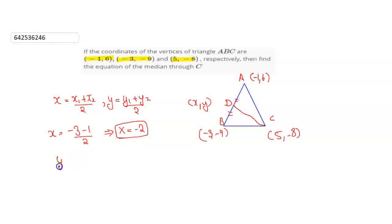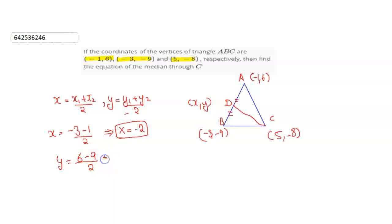And putting the y1 and y2 values, we will get y = (6 + (-9)) / 2, which gives us y = -3/2.